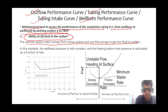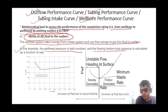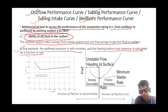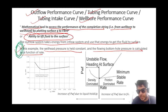In this example, the wellhead pressure is held constant and the flowing bottom hole pressure is calculated as a function of rate. Whenever we are talking about TPR, we keep the wellhead pressure constant and calculate FBHP as a function of rate. I have a good example which will prove this particular point in the coming slides.